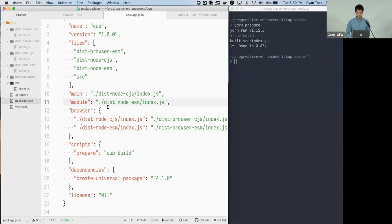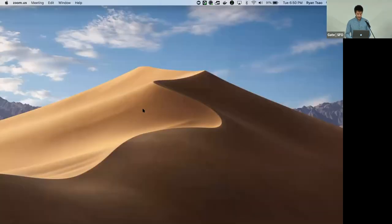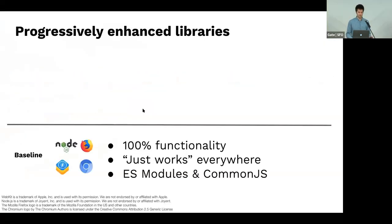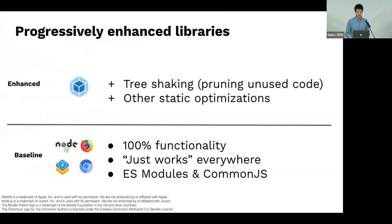You get progressive enhancement: out of the box things are regular CommonJS and just standard, but you get the new module format that allows more optimizations if the bundler or tool supports it. In the browser you have native ES modules; on the Node side CommonJS for compatibility; and consumers using webpack can rely on tree shaking and other static optimizations from the ES module structure. Libraries with a baseline that's progressively enhanced on top.